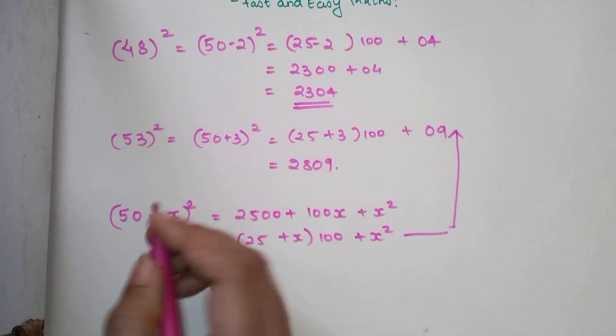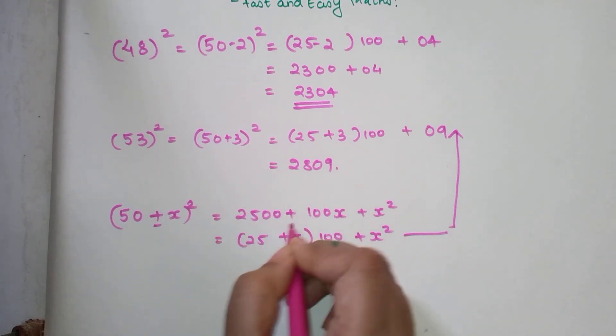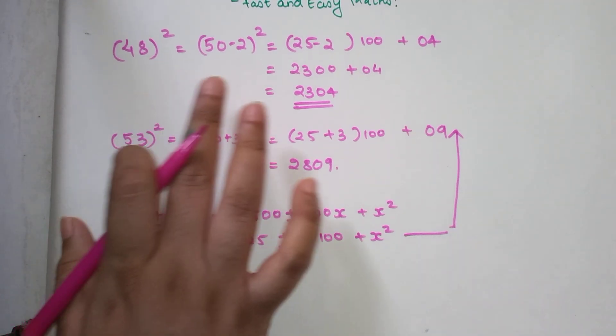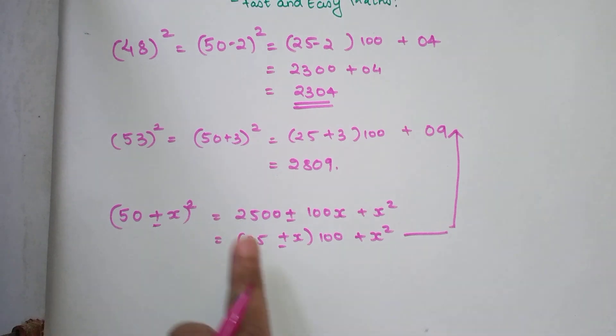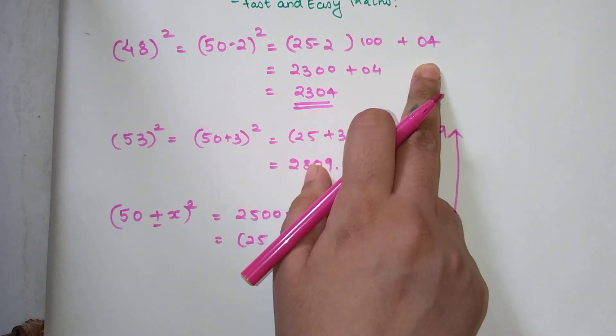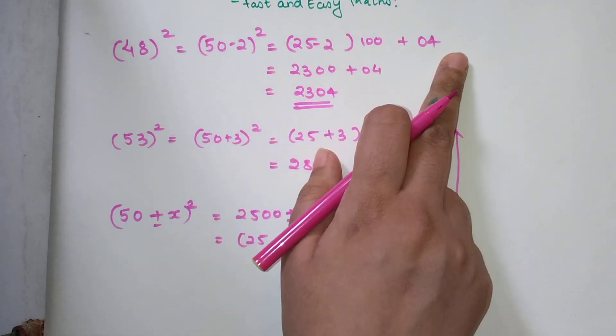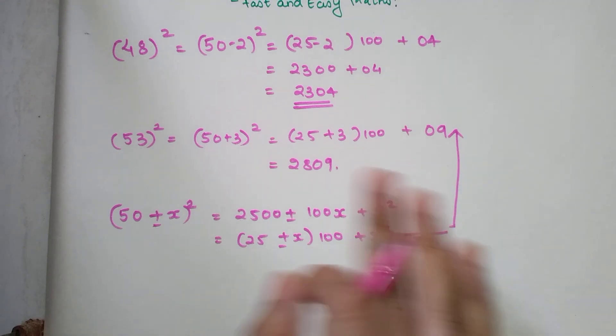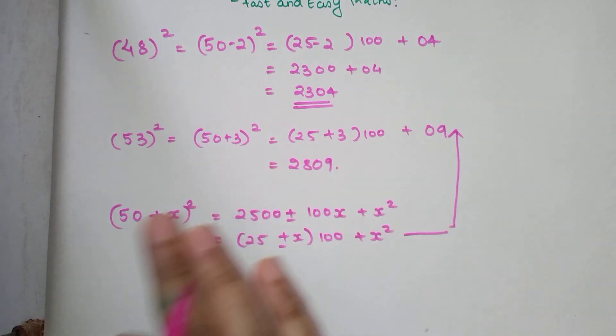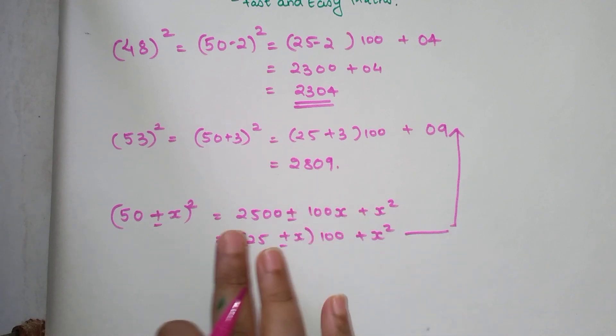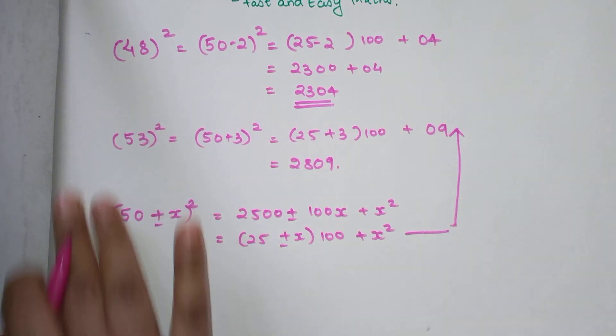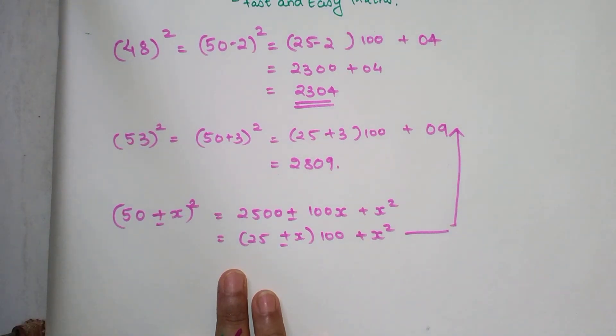So if you had a minus sign over here, this number would have been subtracted. So again, let's see for 50 minus 2. So it would be 25 minus 2 into 100, which is exactly what I did plus last digit square that is 04. And then I'm just going to do the simple addition. Brilliant, right? This trick is amazing. I know it's unbelievable. And trust me, if you remember these tricks, then figuring out the squares of these numbers will not be that difficult.